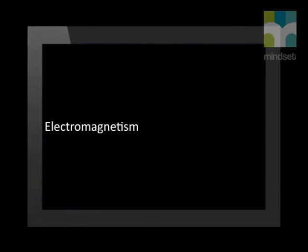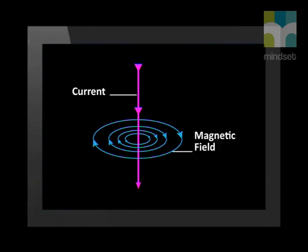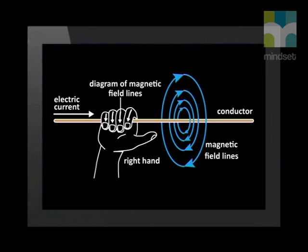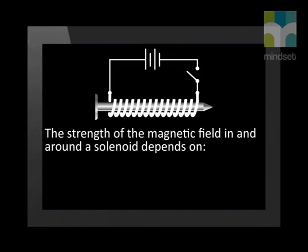We started by learning that electromagnetism is the study of the properties and relationship between electric current and magnetism. Then we investigated that a current carrying conductor produces a magnetic field around the conductor. The direction of this magnetic field is found by using the right-hand rule. This magnetic field is the principle on which electromagnets work. Electromagnets are temporary magnets formed by current carrying conductors.